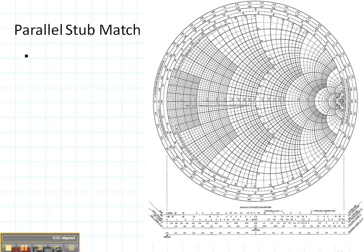Now we've just done a series stub match. Let's consider a parallel stub match. In this case, again, I have ZL and I'm going to move a distance D to match my line and then I'm going to add in a parallel stub. And this time let's do a parallel stub with a short circuit on the end. And what I want to know is the length that I need for this stub.